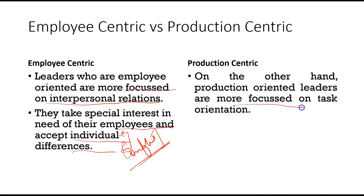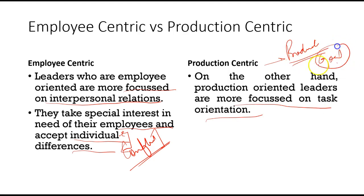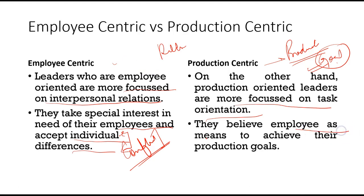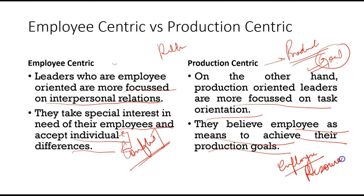On the other side, production-centric leaders are completely focused on task orientation. Their main goal is related to production — meaning productivity. They want to achieve the organization's goals. They have no special interest in relationships with employees; for them, the employee is merely a medium to achieve production goals — just like a machine or any other resource.